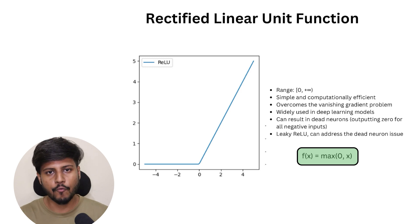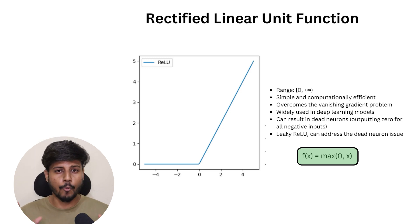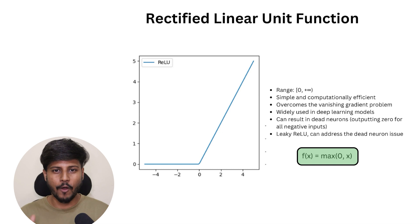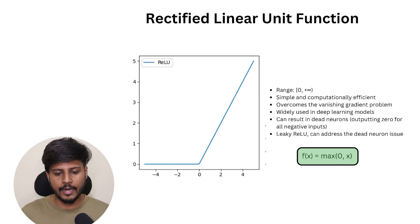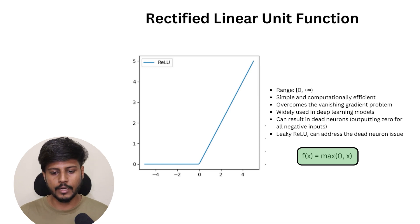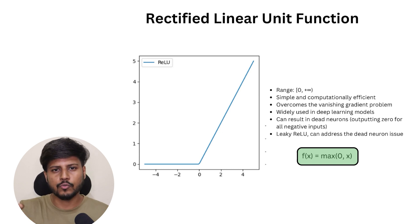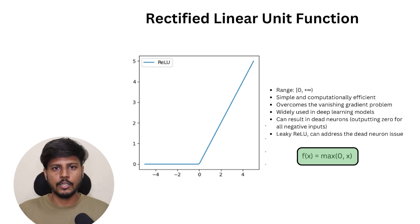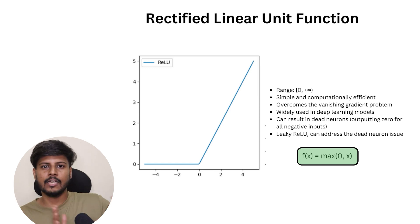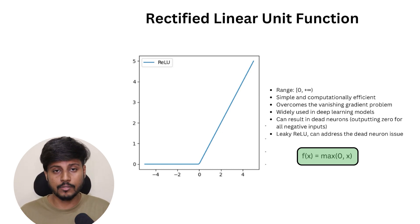Next we have the Rectified Linear Unit activation function — ReLU — which is the most commonly used activation function. Whenever you search how to build a neural network, you'll find this particular activation function again and again. It is mostly used in hidden layers. Basically, it returns the maximum of zero and the input value, so all negative values are converted to zero, while positive values remain unchanged. This also helps address the vanishing gradient problem.